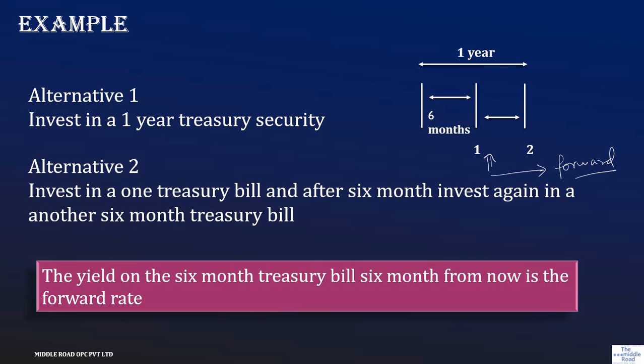Now, when you're looking at the yield of a six month treasury bill six months from now, this is your present time, which is zero. And you want to know what would be the rates at point period one, which is like six months from now at the time.